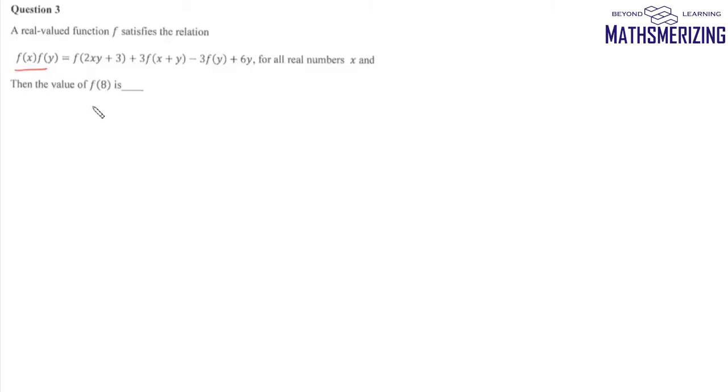We'll substitute x = 0 into this expression. Putting x = 0, we get f(0)·f(y) = f(3) + 3f(y) - 3f(y) + 6y.